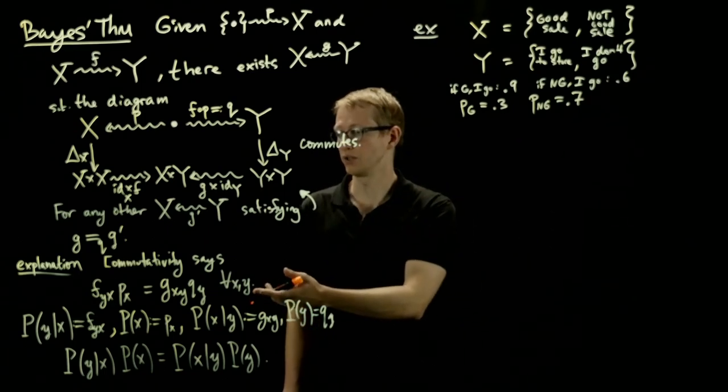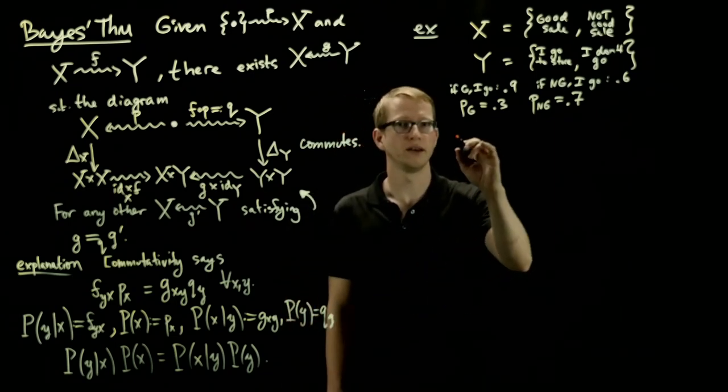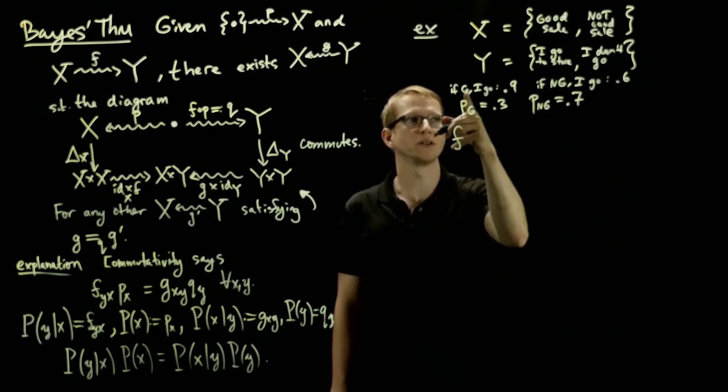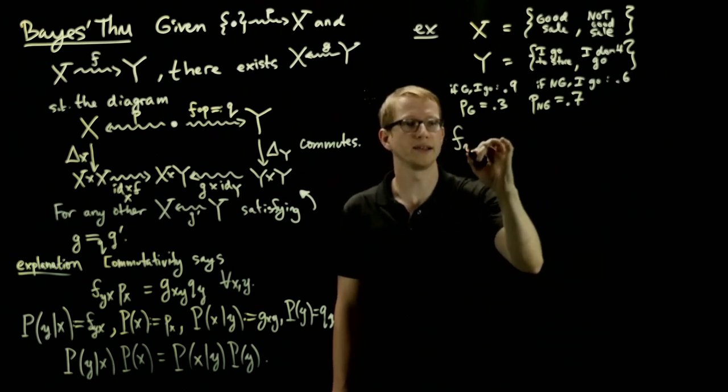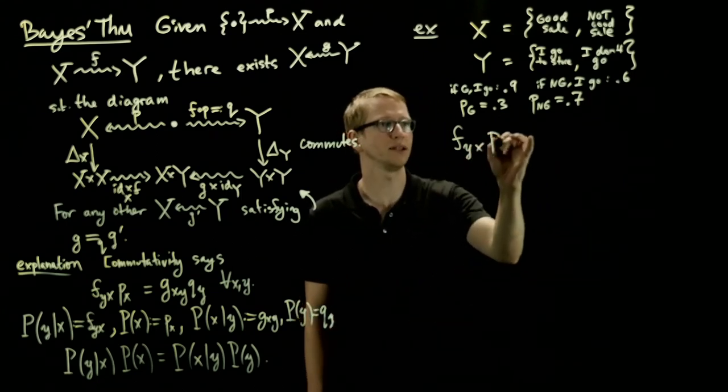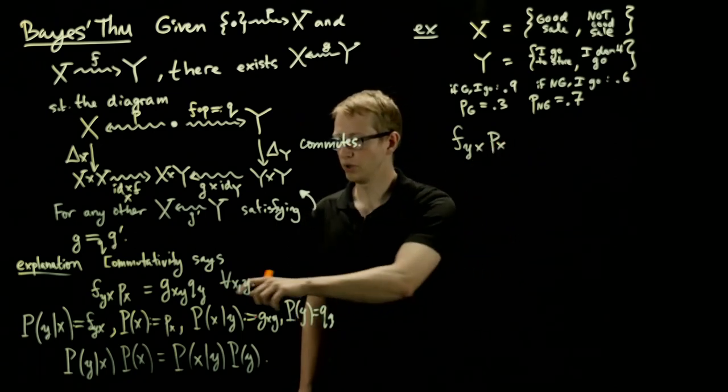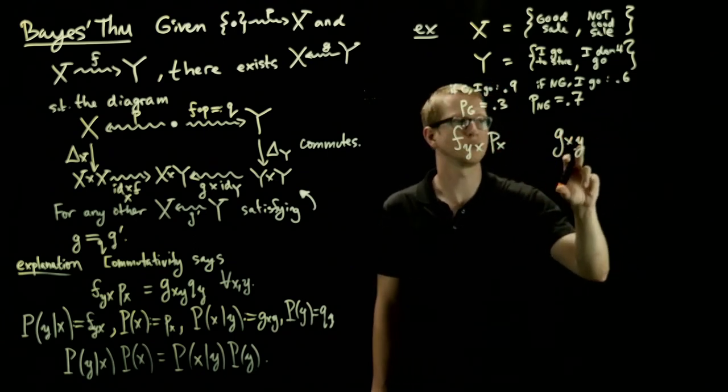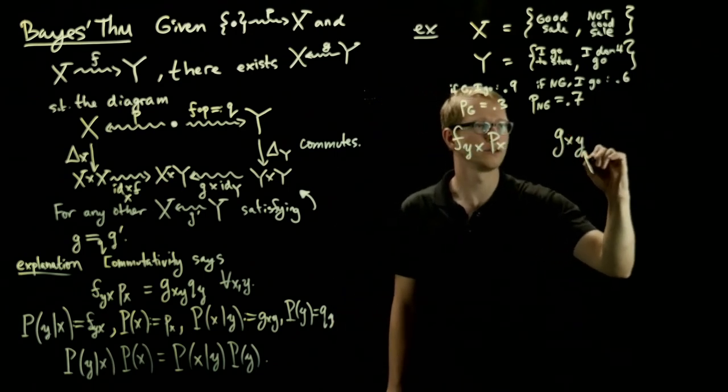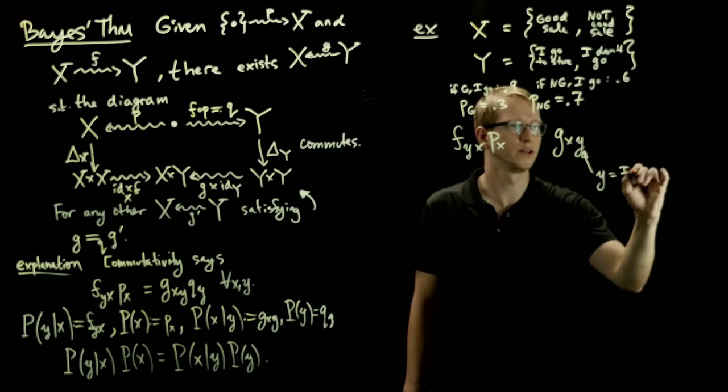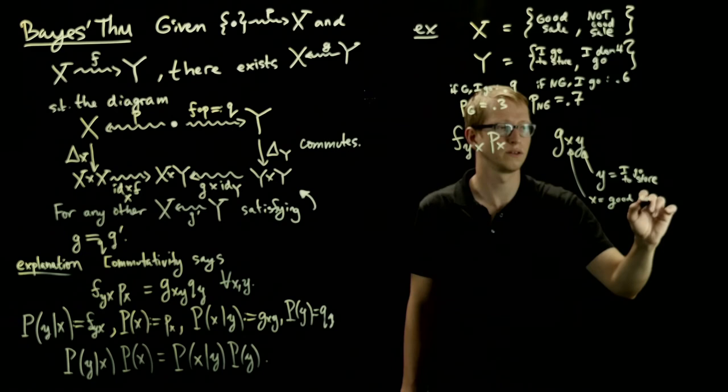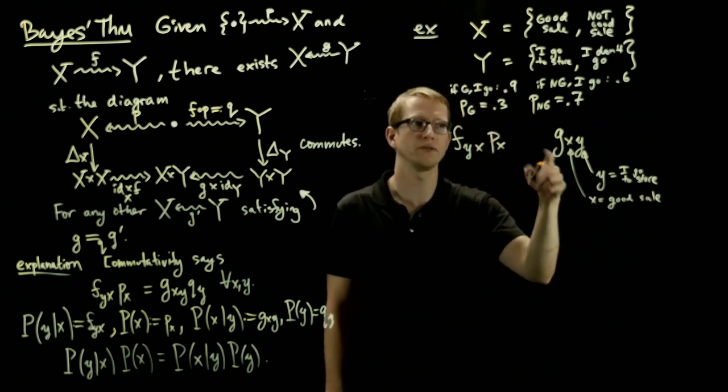Well, if we look at this expression and we compare these two sides, then we can say that f corresponds to the if there's a good sale versus if there's not a good sale, how likely am I to go or not as f(y,x). And the probability that there's a good sale is p(x). And if we wanted to know, so let's say g is on the other side, so g of x given y. So this says, if you see me at the store. So here, this element y is I'm at the store, and x is there's a good sale. So if you see me at the store, what's the probability of there being a good sale?